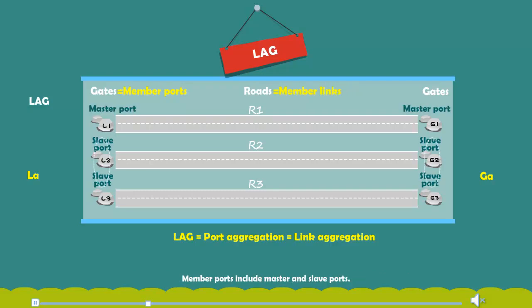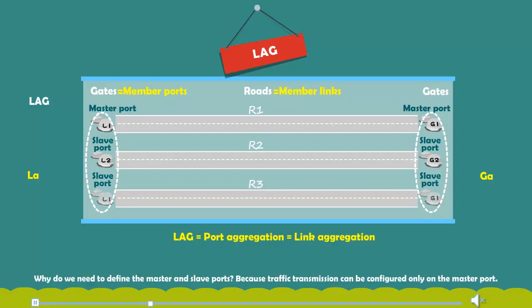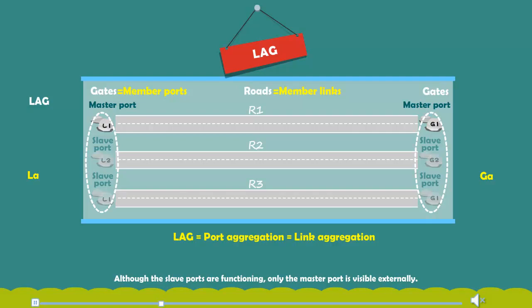Member ports include master and slave ports. Why do we need to define the master and slave ports? Because traffic transmission can be configured only on the master port, although the slave ports are functioning. Only the master port is visible externally.